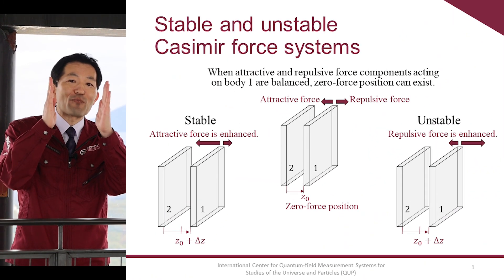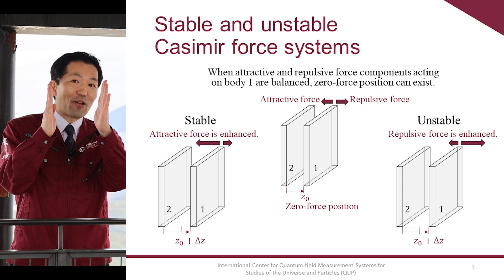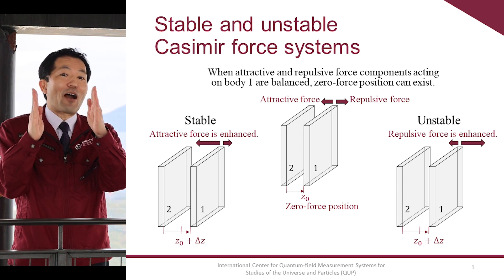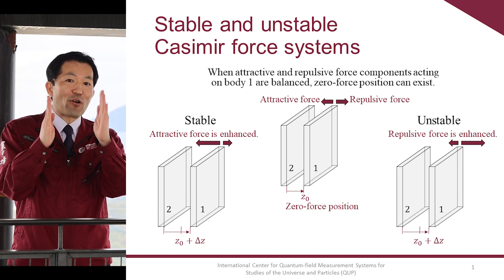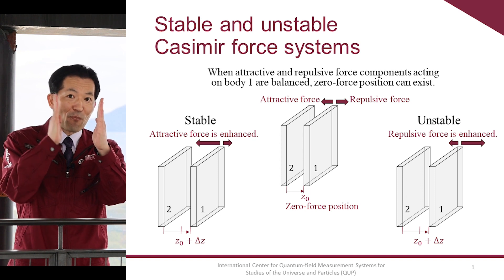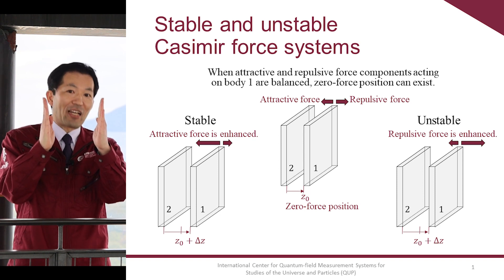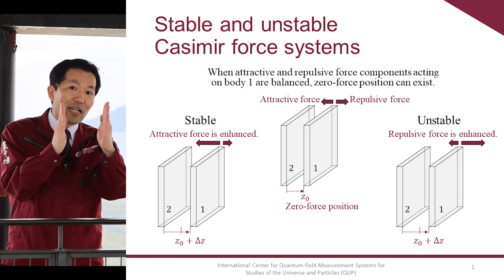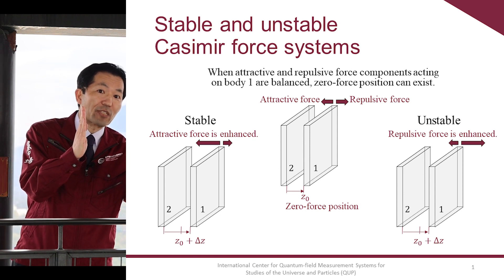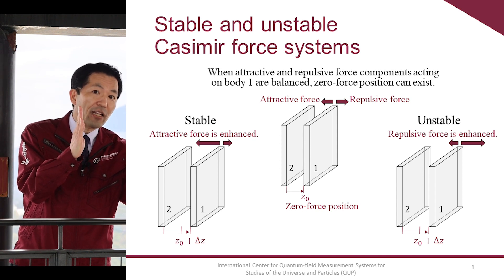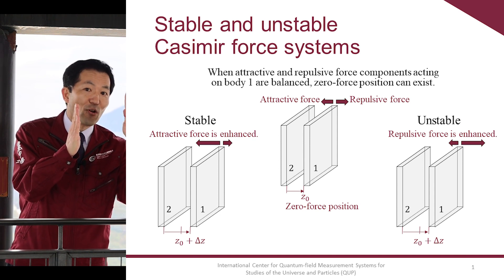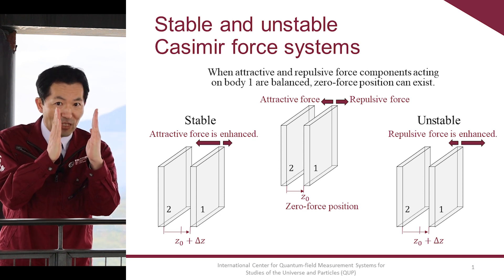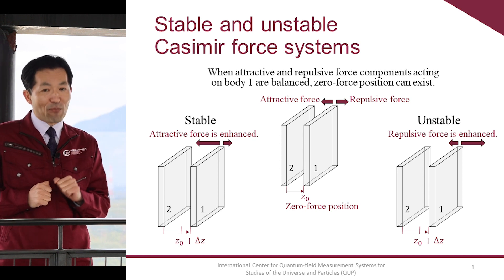Suppose two bodies. When attractive and repulsive force components acting on body 1 are balanced, body 1 can stay at a distance away from body 2 at the zero force position. When body 1 is a little away from the zero force position and the attractive force is enhanced, body 1 can move back to the zero force position. This system is stable.